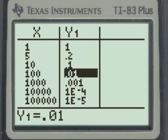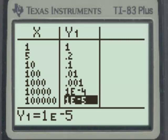So as you can see from our values, as x gets bigger, our y values are getting smaller and smaller, approaching zero.